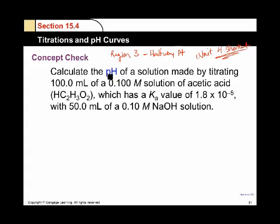All right, what's the goal here? Calculate the pH of the solution by titrating 100 milliliters of 0.1 molar solution of acetic acid. It has a Ka value that's given and now we've added in 50 milliliters of a similar concentrated sodium hydroxide solution.